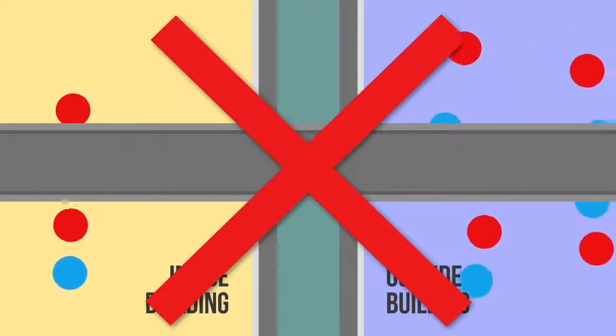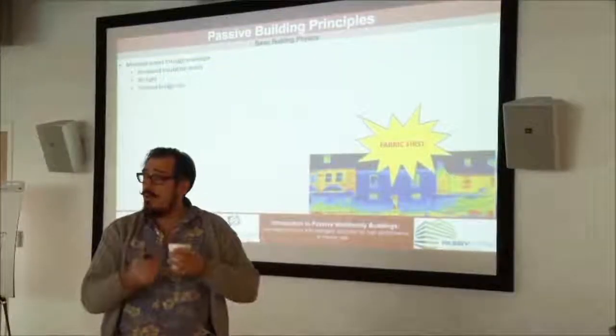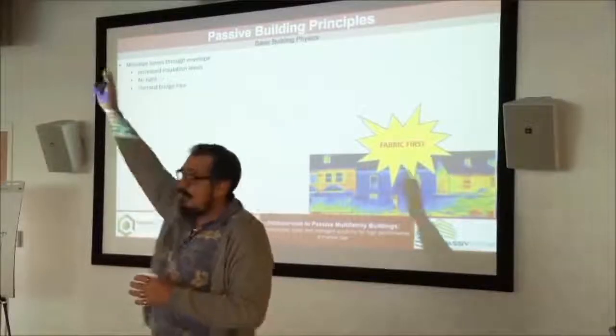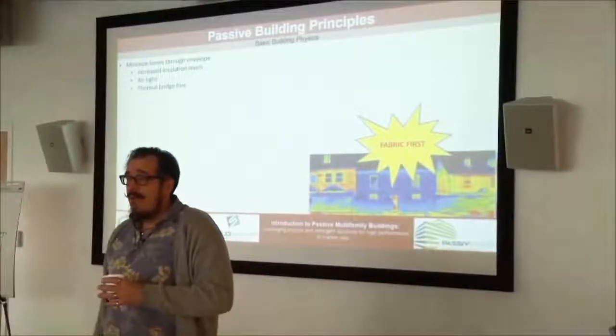There are ways to deal with that. There's a company called Schock Isocorb that makes a connector, so you can get your architectural thrust if you want and not have a thermal bridge.